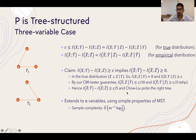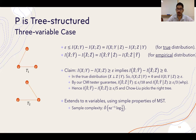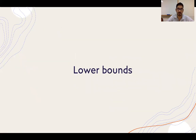This argument shown for three variables extends nicely to n variables using properties of the maximum spanning tree, scaling the sample complexity by a factor of n. We skip those details and refer to our paper.